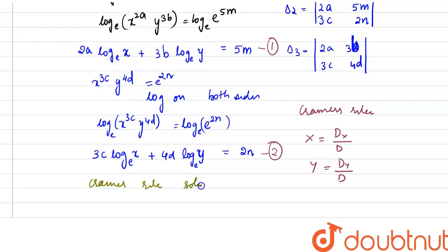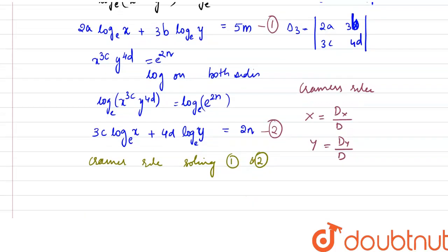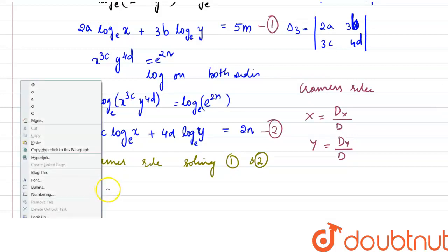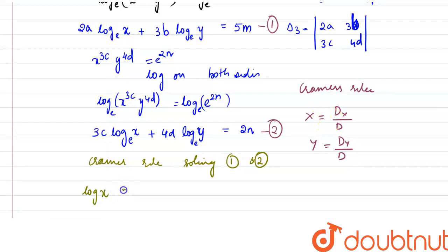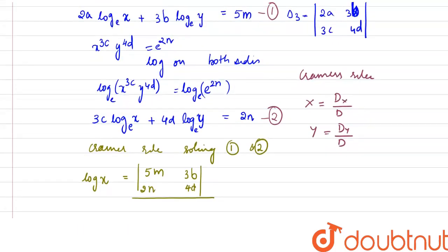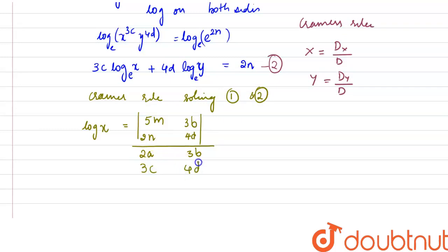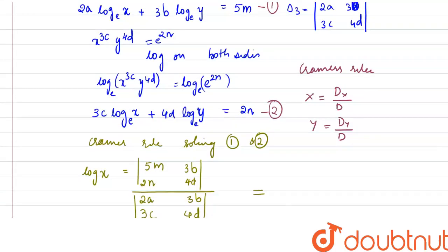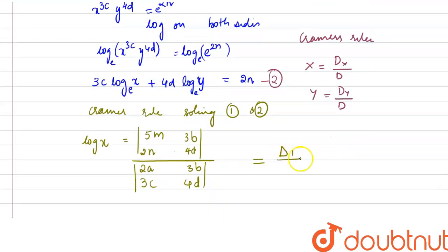According to Cramer's Rule, log x equals the determinant with entries 5m, 3b, 2n, 4d divided by the determinant with entries 2a, 3b, 3c, 4d. This numerator is nothing but δ1 and the denominator is δ3. So log x = δ1/δ3.